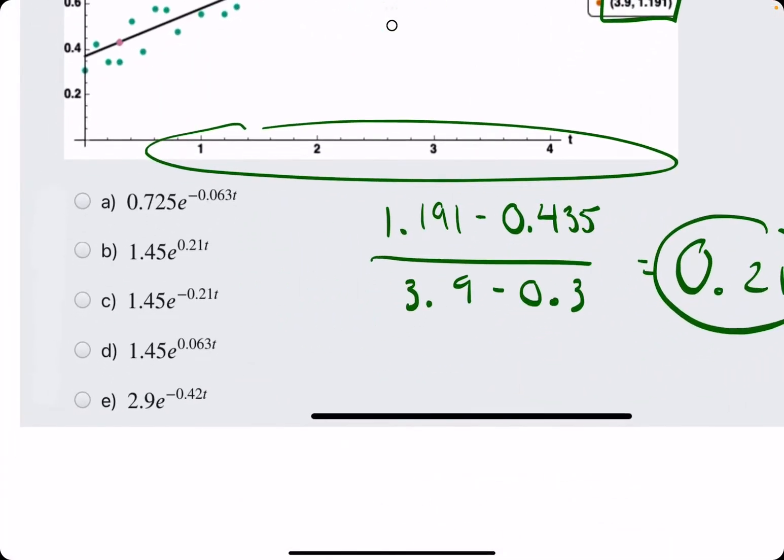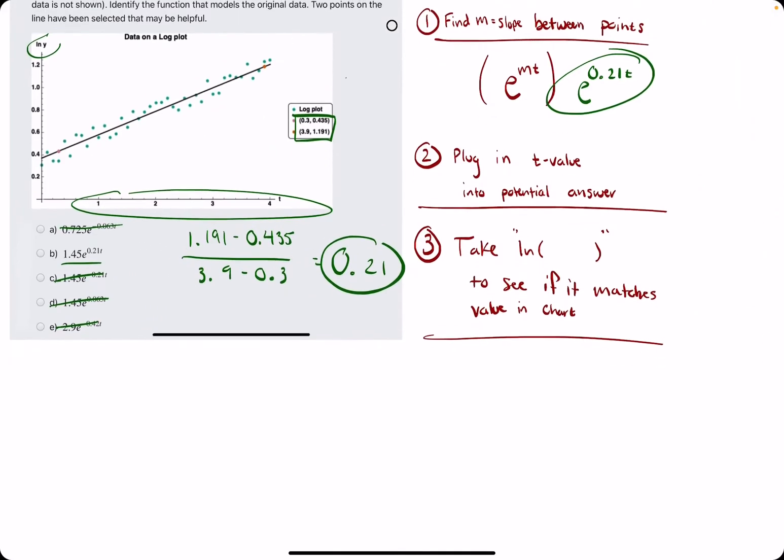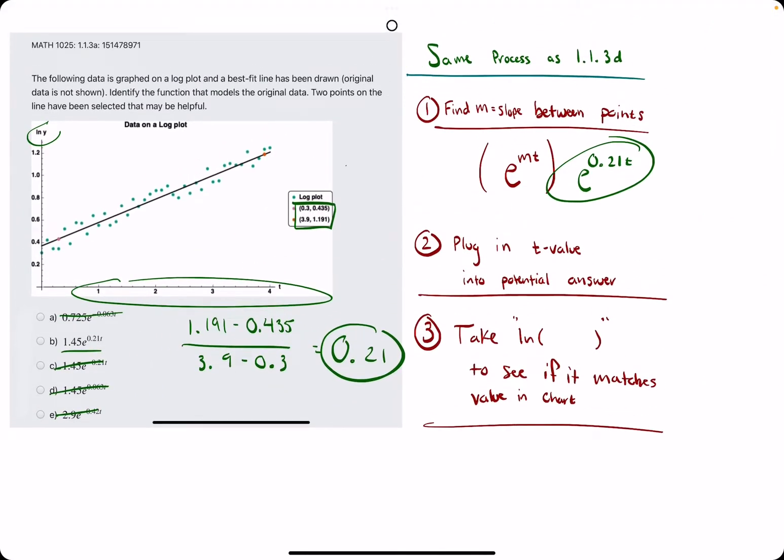We look at these answer choices, and really the only one with that as a possibility is b. We're looking for a positive 0.21, so we can eliminate option c. It looks like b is our answer, just like that. But let's confirm the 1.45, or at least talk about how we would do that.